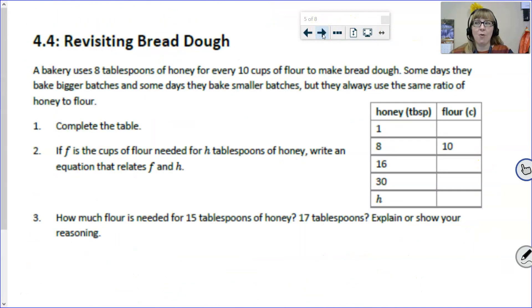Now, we are ready for completely on your own. New problem here. I'll read it to you, and then I want you to pause the video and see if you can work through that table and write your own equation. A bakery uses 8 tablespoons of honey for every 10 cups of flour to make bread dough. Some days they bake bigger batches, and some days they bake smaller batches, but they always use the same ratio of honey to flour. Again, notice that the information that was given to us in the problem is here in the table.